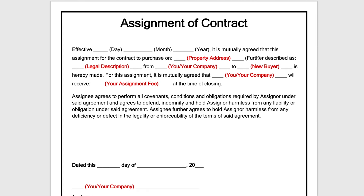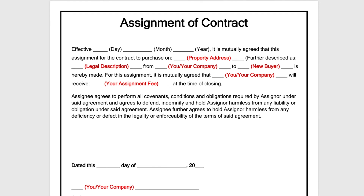Assignee agrees to perform all covenants, conditions, and obligations required by assignor under said agreement, and agrees to defend, indemnify, and hold assignor harmless from any liability or obligation under said agreement. Assignee further agrees to hold assignor harmless from any deficiency or defect in the legality or enforceability of the terms of said agreement.